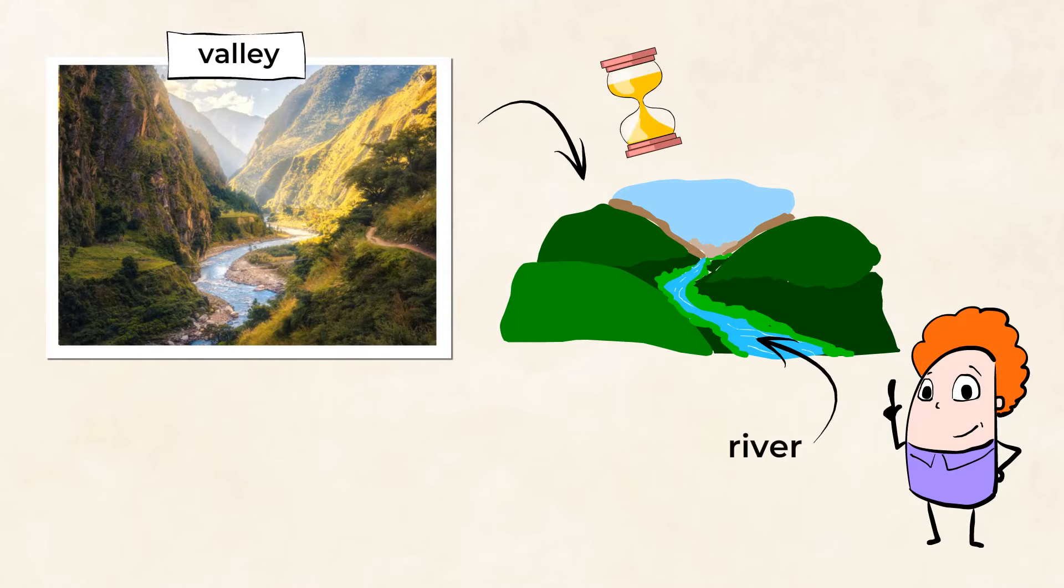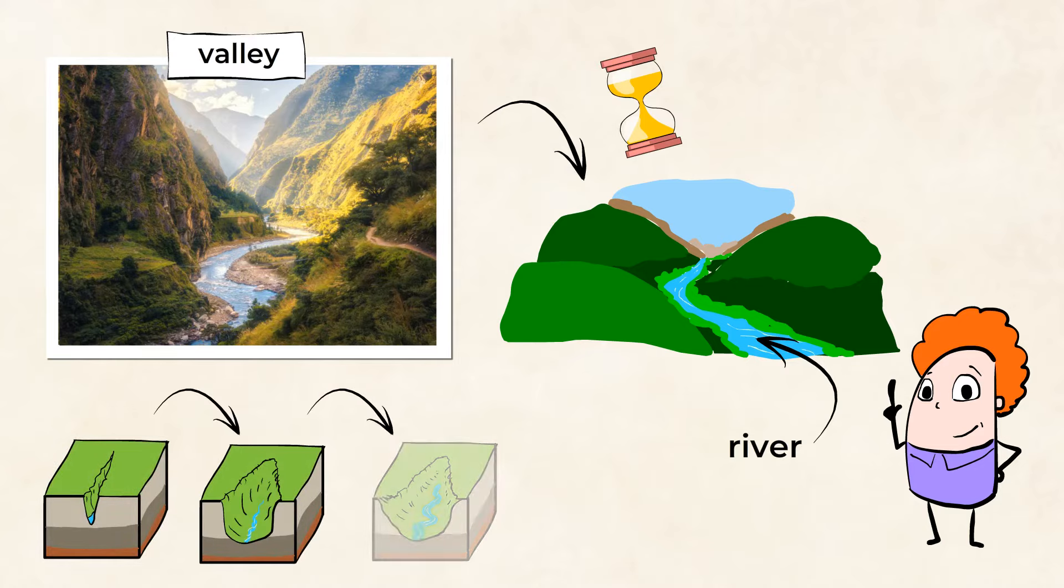Now, it takes a really long time for a valley to form. Thousands or even millions of years. And valleys are narrow when they're first formed, but they get deeper and deeper over time.